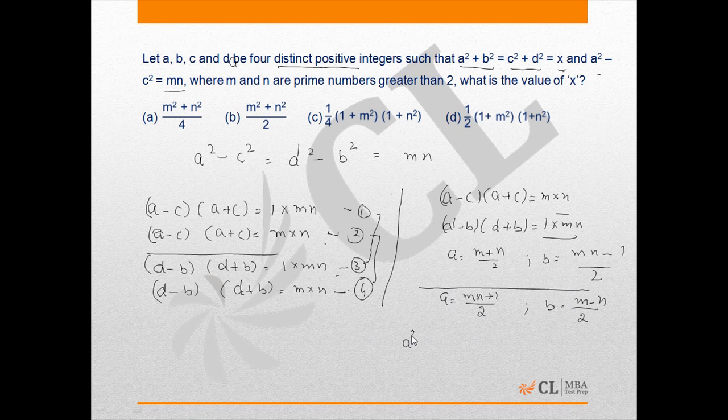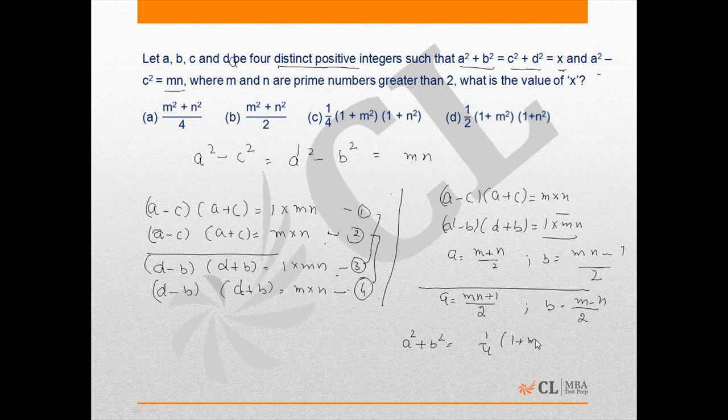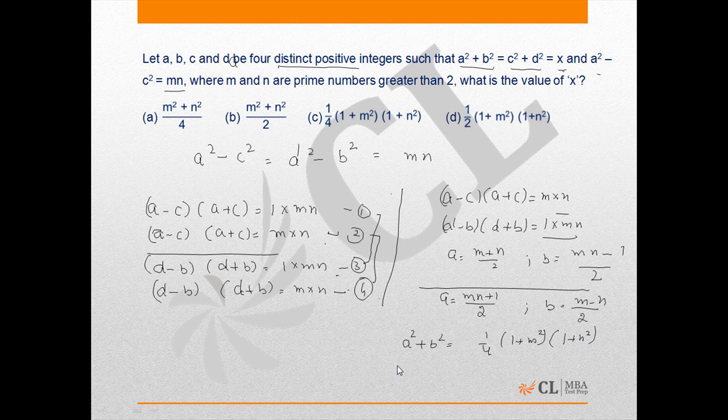The value we will get on solving this a square plus b square will be 1 by 4, 1 plus m square into 1 plus n square. This is on solving these two equations simultaneously. This is the correct option c and this is the correct answer.